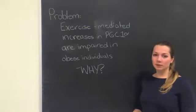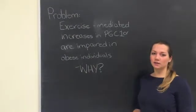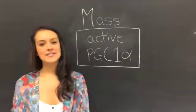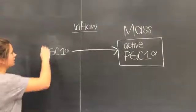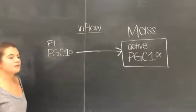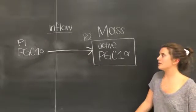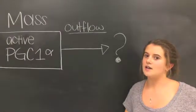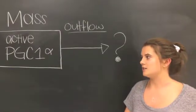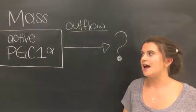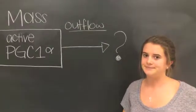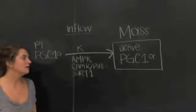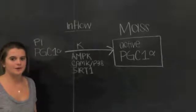We will present and further explore this problem within the context of the conservation of mass model. In this problem, our mass will be active PGC-1-alpha. Our P1 for inflow is PGC-1-alpha content. Our P2 is our mass active PGC-1-alpha. Because we have not yet discussed the outflow of active PGC-1-alpha in class, we will only be looking at the factors affecting inflow. Our conductance is AMPK, CAMK, P38, and SIRT-1.